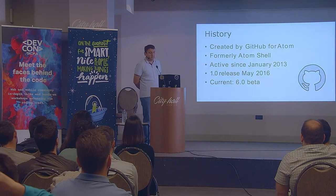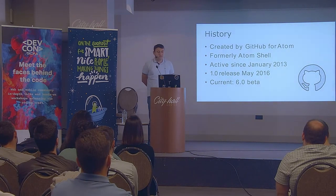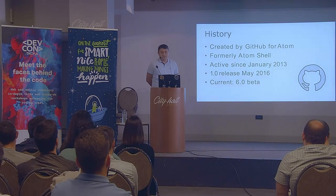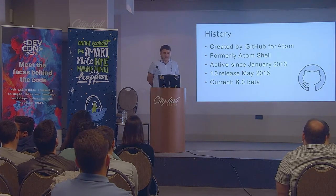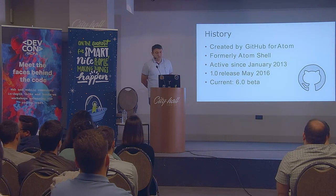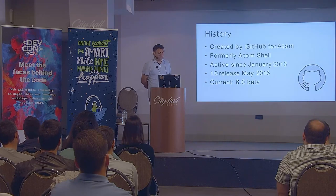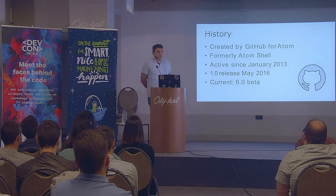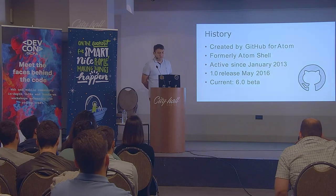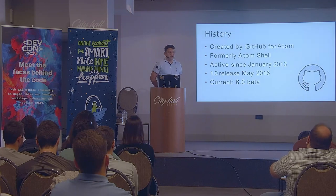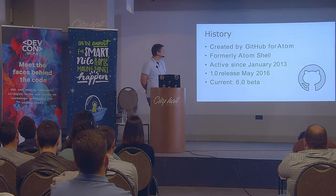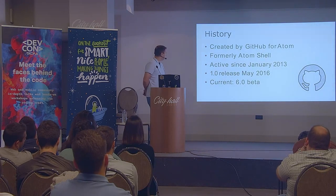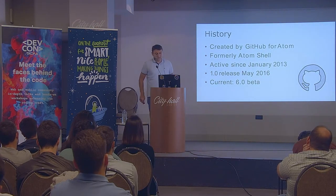A bit of history: Electron was created at GitHub for the Atom editor, but it was not named Electron initially — it was called Atom Shell. There was some confusion about what it could be used for, and a year later GitHub decided to rename Atom Shell to Electron so everyone would know this platform could be used for writing different applications, not only their code editor. They started in January 2013, and the stable version is now 5.0. The 0.1 release was in May 2016.